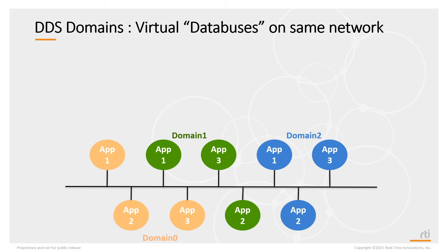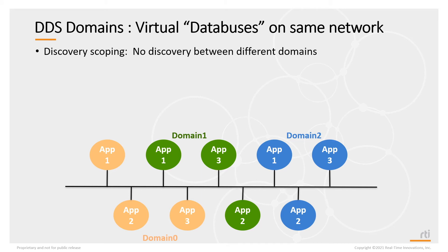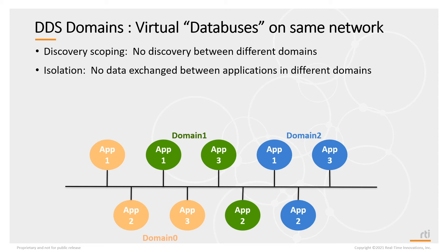When you have different DDS domains, it allows you to create basically virtual databases on the same physical network, similar to VLANs on the same LAN. Here we have three domains — domain 0, 1, and 2 — and applications in a domain will only talk to applications in their domain because they never discover an application outside of their domain. They will never exchange data, or any packets at all, between applications that are in different domains.